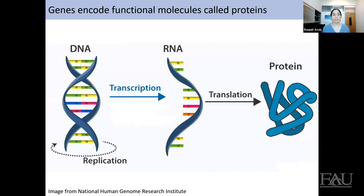To understand gene function, we need to think about how functions are conferred. The functional units in our cells are proteins — three-dimensional molecules. The formula or recipe for them is given by DNA. Making a protein involves two complex steps: first, transcription, where the double-stranded DNA helix is transcribed into a single-stranded RNA molecule; and second, translation, where that RNA sequence is translated into a protein. The protein starts as a linear molecule and then folds into a conformation that allows it to perform specific functions in the cell, such as increasing melanin production in your eyes.